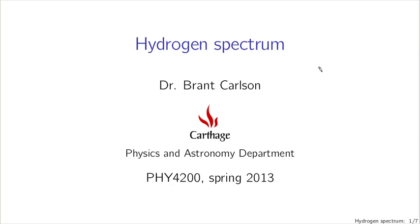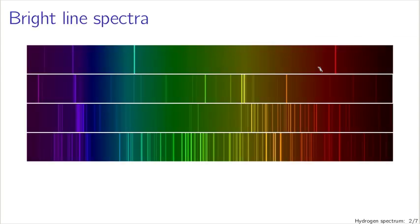One of the key experiments that really got quantum mechanics started was spectroscopy. Bright-line spectra of the elements couldn't really be explained in the context of what physics was known at the time, and we've finally gotten to the point where we can use the quantum mechanics we've learned so far to explain these bright-line spectra — at least some of them. This is the spectrum of hydrogen, mercury, neon, and xenon — four gases — and we'll be able to explain successfully the most simple one: hydrogen.